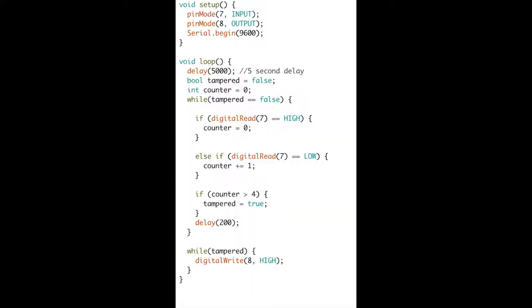Now I'll talk about the code that went into this tamper-proof box. The code was made to light up the LED when the box has been opened for a short amount of time. In the example shown, the program checks if the circuit is open or closed every tenth of a second.